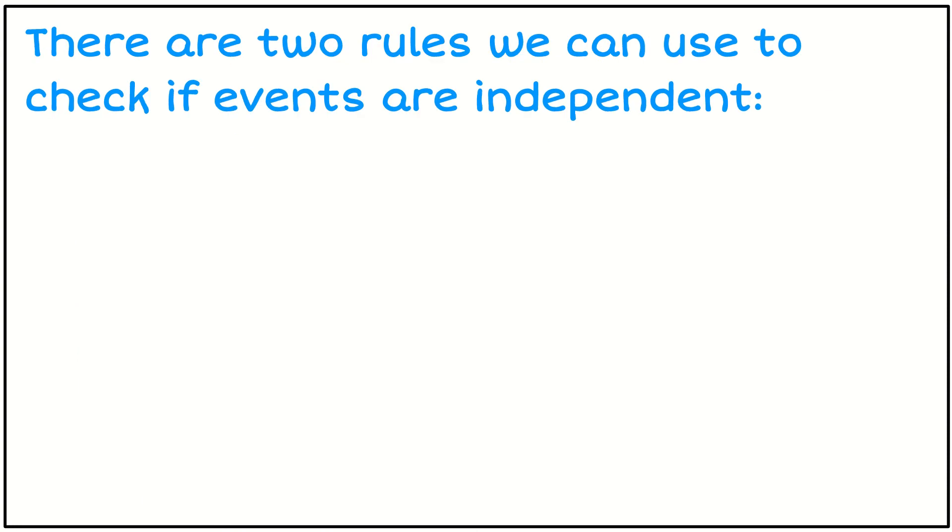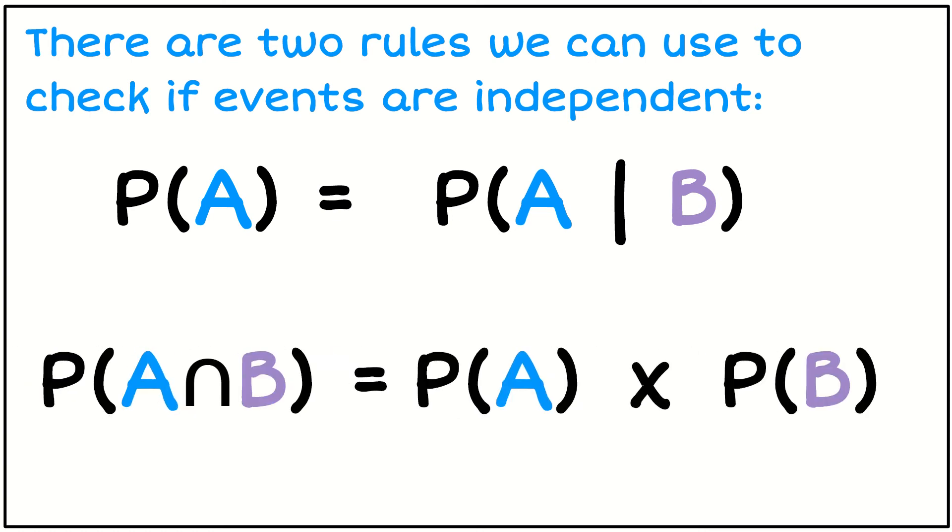So there's a couple of rules that we can use, and depending on what information we've been given in a question will determine which rule we use. So the first rule is that the probability of some event is the same as the chance of that event given some condition. So what that's saying is we don't care whether or not something else has happened. Knowledge of that something else has happened doesn't change the probability. The other rule we can use is whether the intersection is equal to the probabilities individually being multiplied. So these are our two rules to check and they're on your formula sheet.